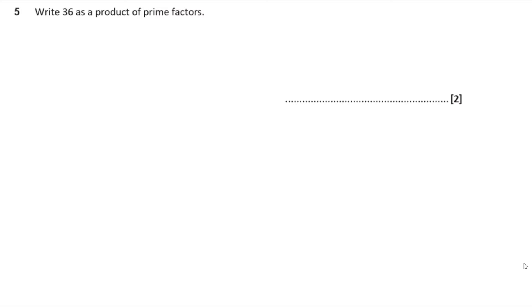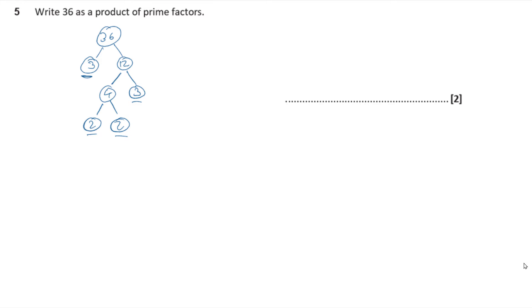Question 5. Write 36 as a product of its prime factors. I write 36 in a circle and think about what two numbers multiply to give me 36. I'll go for 3 and 12. Three is prime so I stop there, but 12 is not. Four times three equals 12. Three is prime, but four breaks down into two and two, which are both prime. So 36 equals two times two times three times three. Check: 2×2=4, ×3=12, ×3=36. Correct.